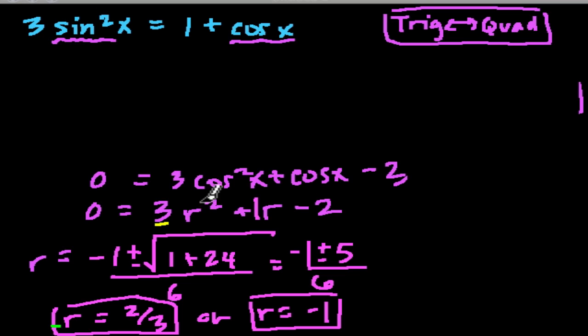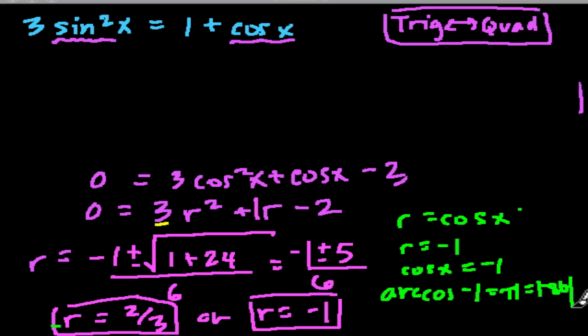If you think back to what we said before, we were setting r equal to cosine of x. So now we're saying if r is negative 1, r equals negative 1, then the cosine of x needs to equal negative 1 as well. So we're going to find out what value of x, if you take the cosine of it, will give us negative 1. And to do that, we find the arc cosine of negative 1, and that is pi, or 180 degrees.